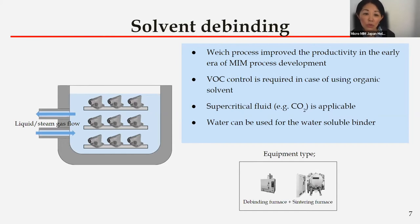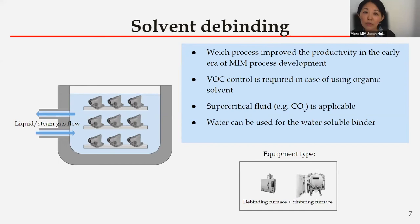Water is drawing renewed attention recently from the perspective of sustainable processing. Generally, a polyethylene glycol (PEG) base binder is used for this water debinding. Though there is a low flowability issue, it is getting attention. Different from thermal debinding, it is currently impossible to process solvent debinding and sintering in one chamber.